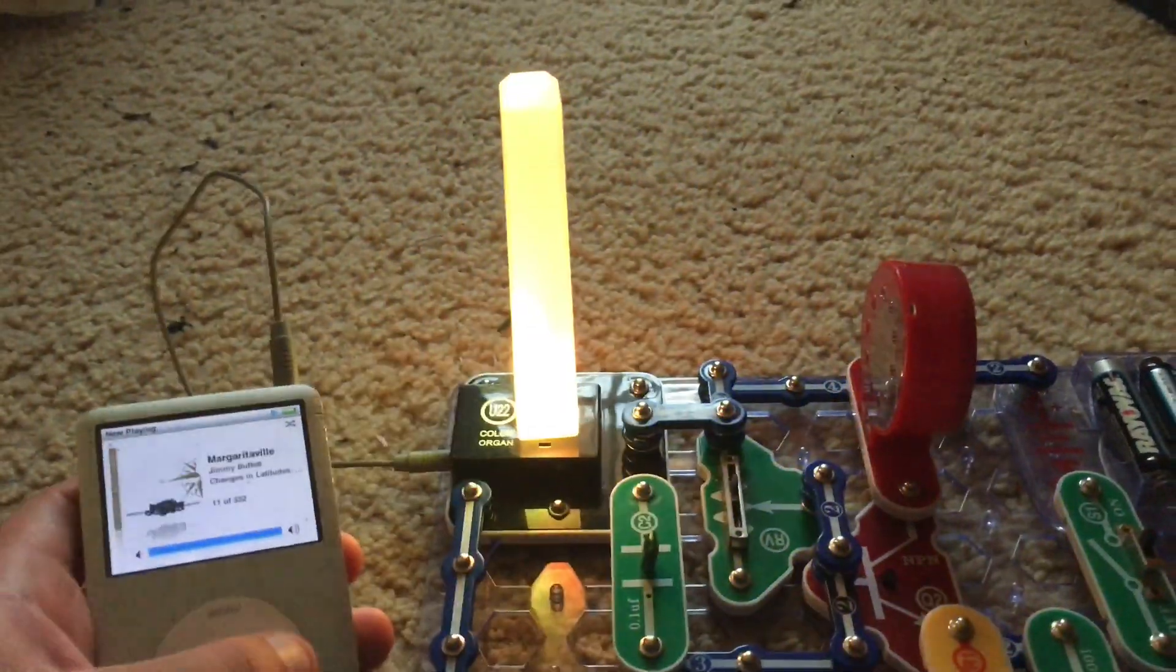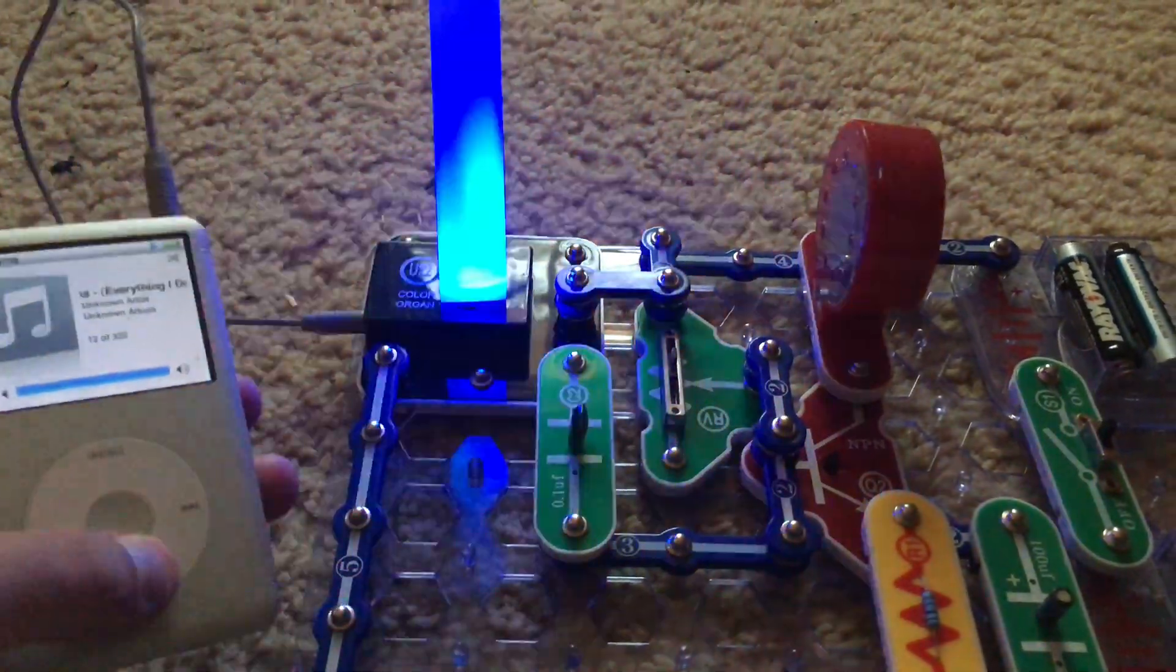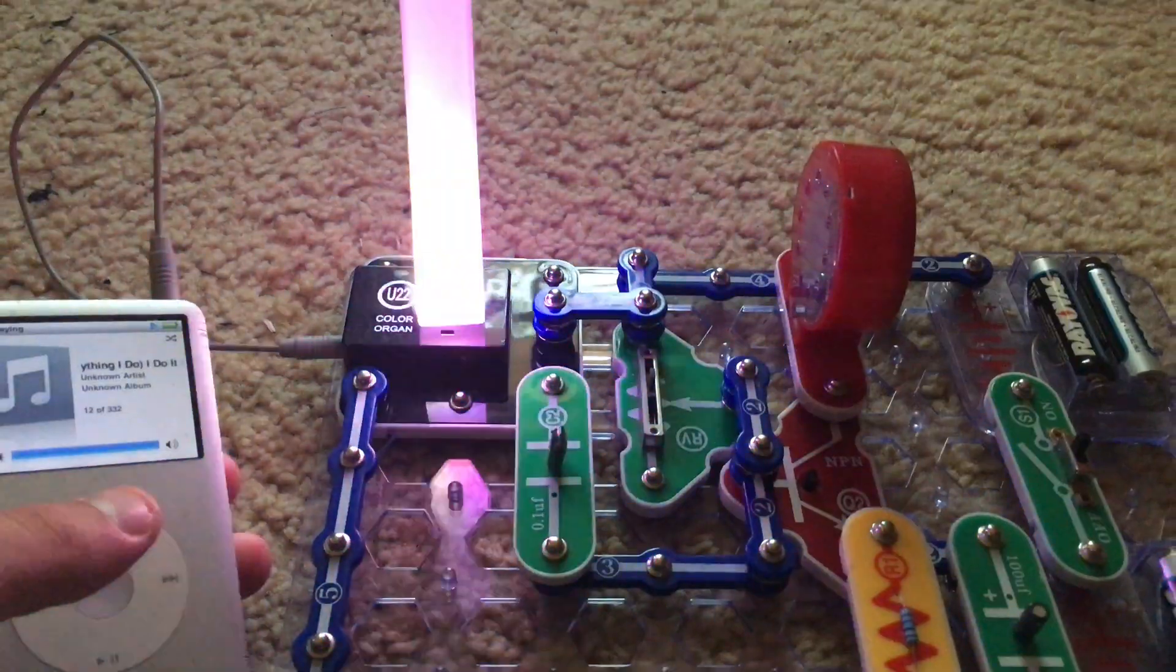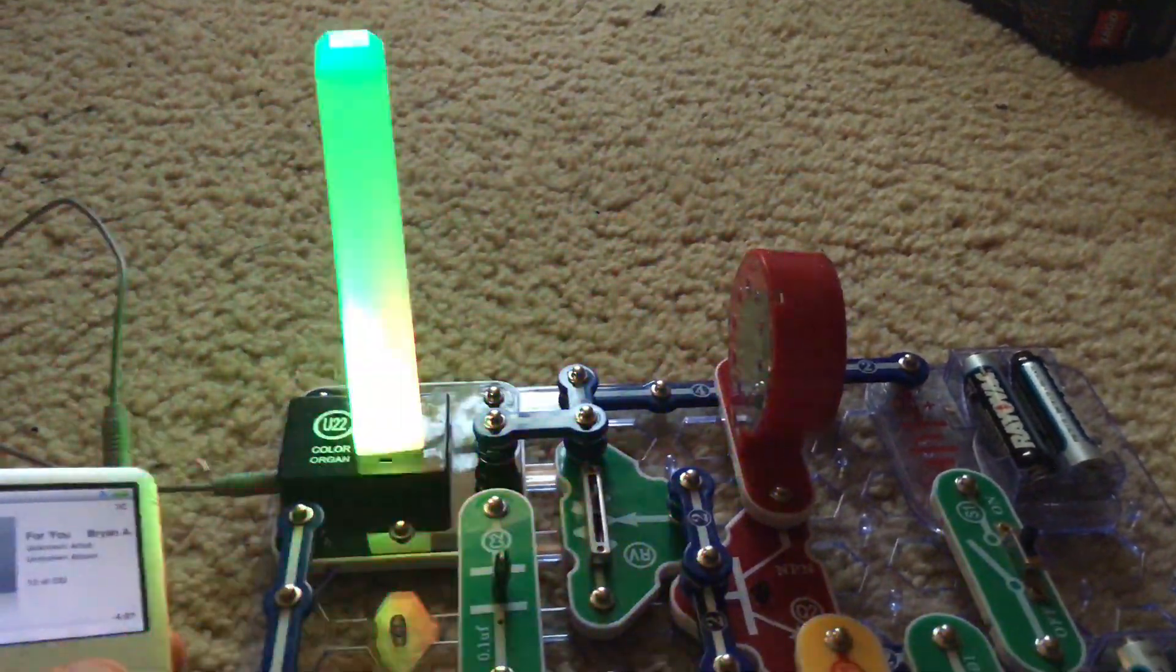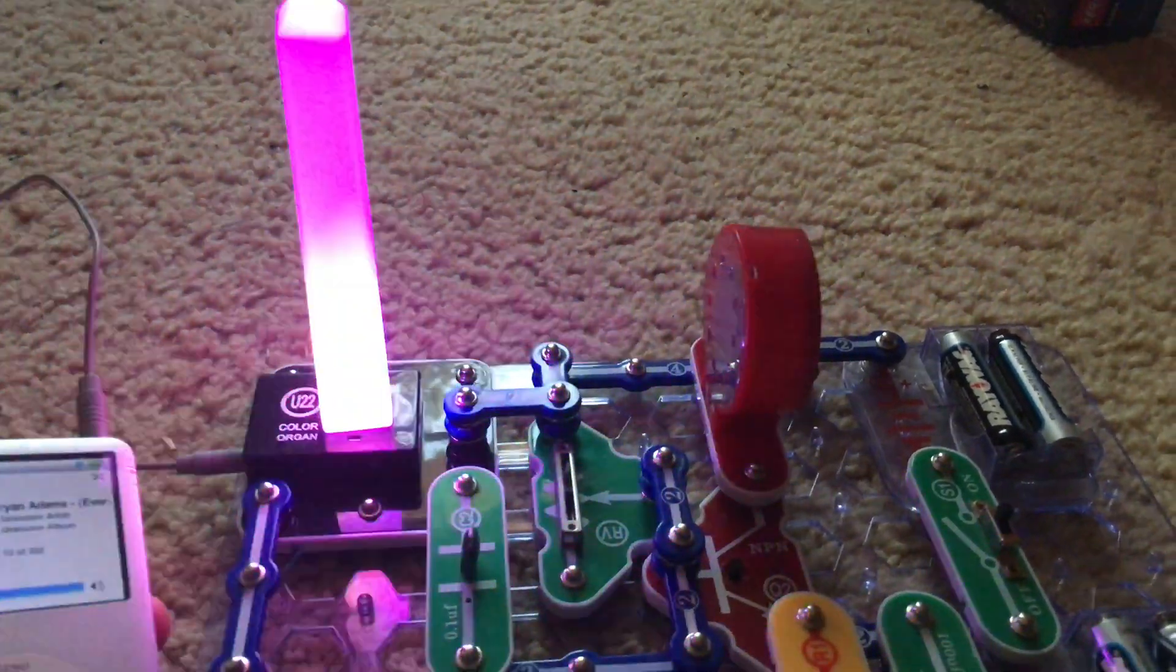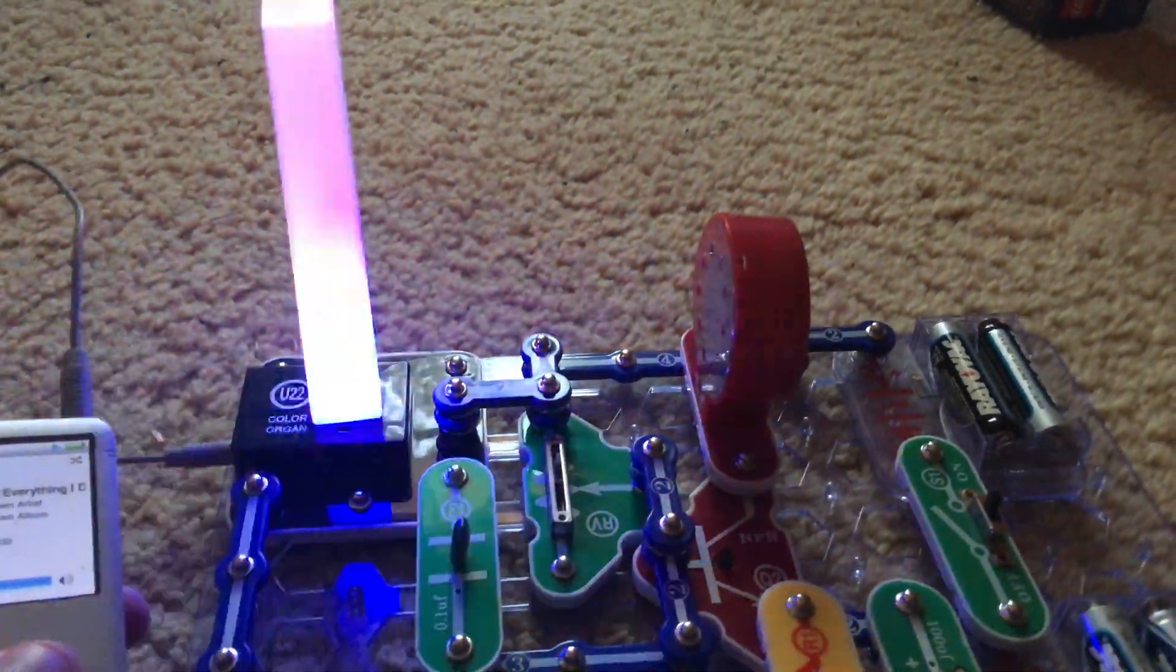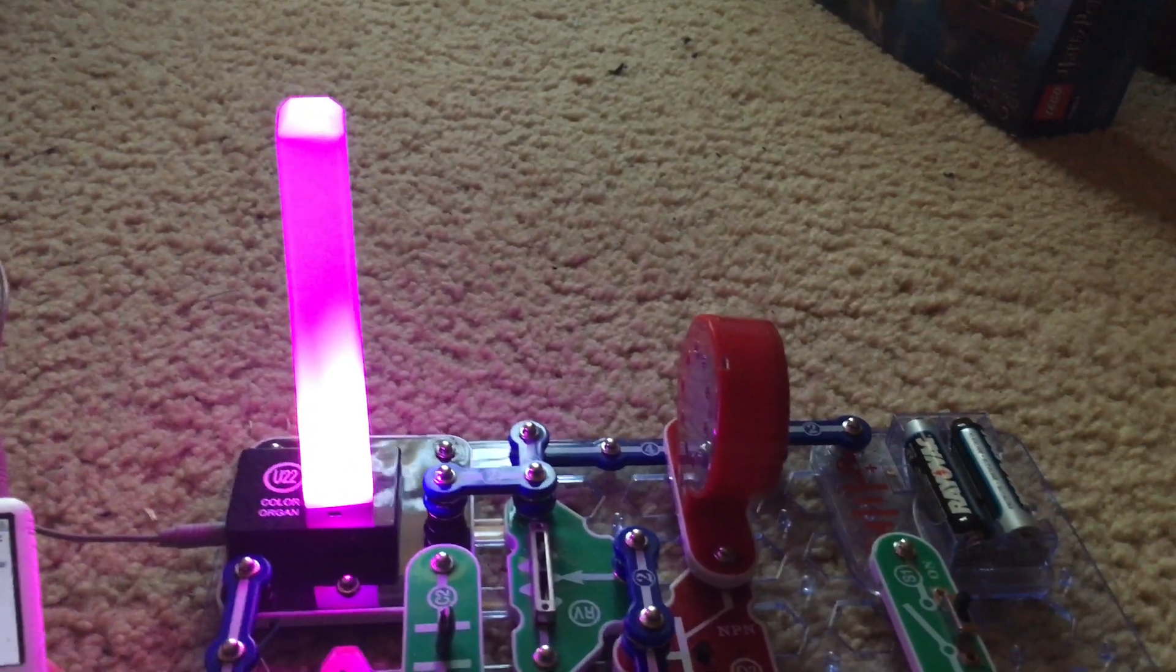Now I am going to switch to a slower song. The colors are still changing pretty fast but this song has a slower beat. Turn the volume down and the LED remains one color.